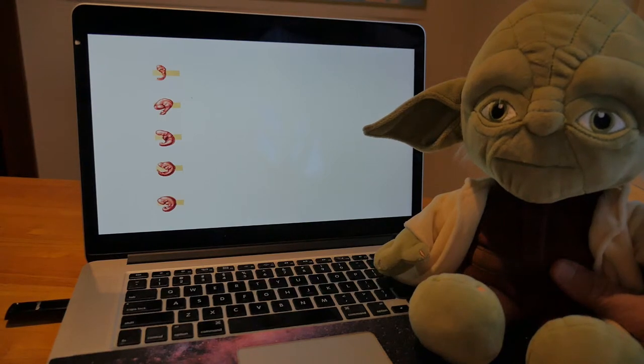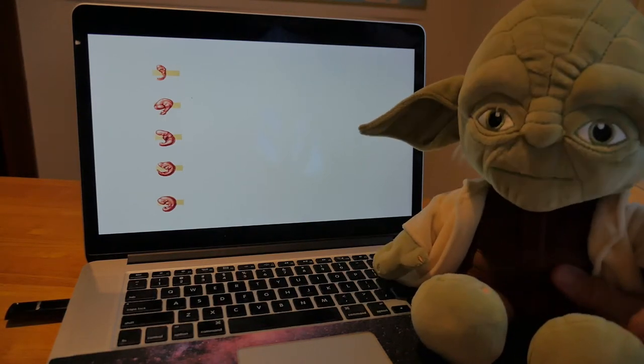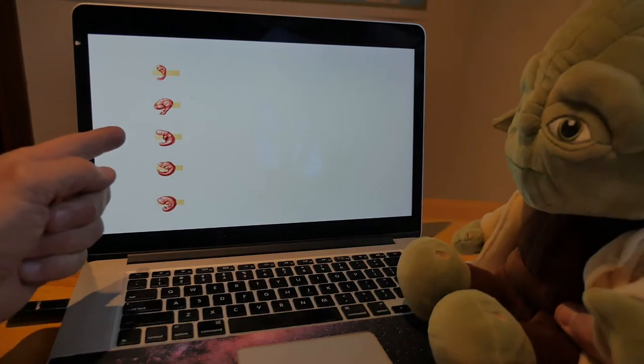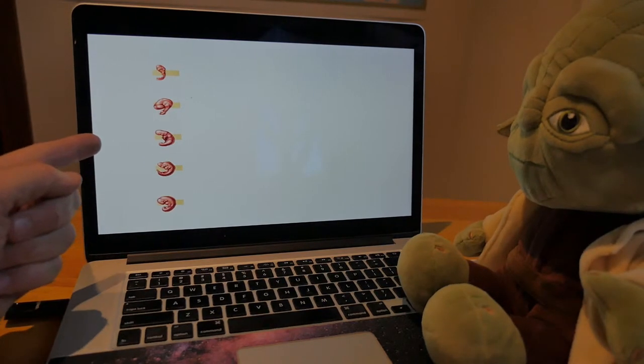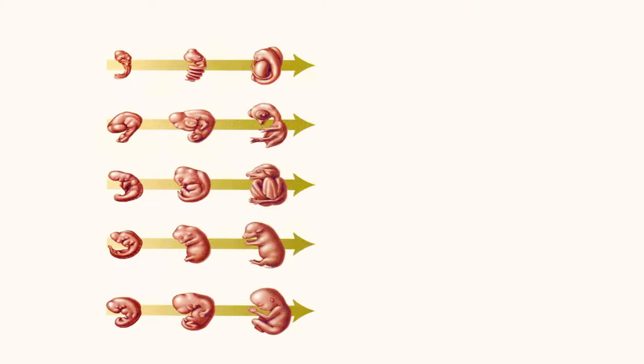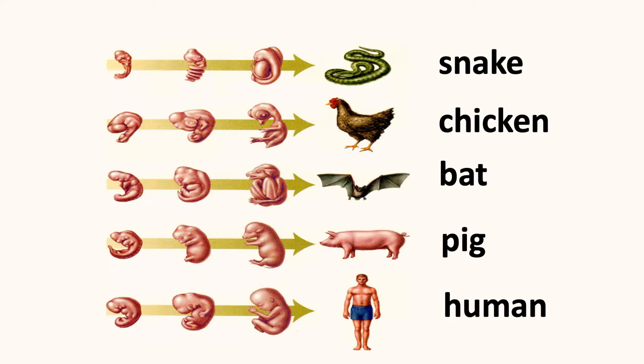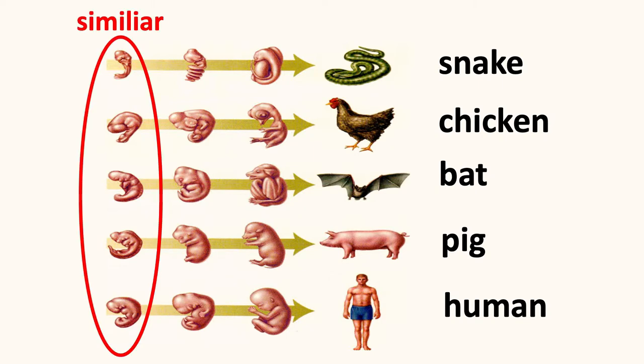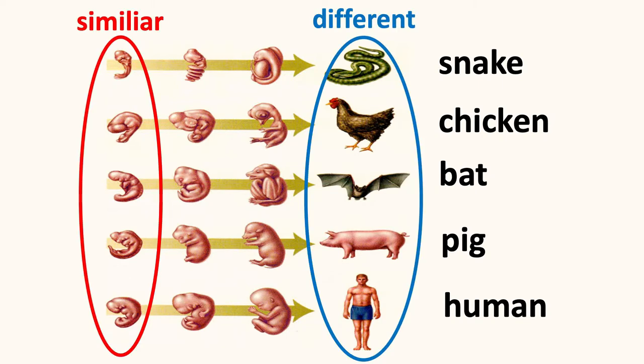So Yoda, do you want to see something interesting? Have a look at this. Now life forms, particularly the vertebrates shown here, these are embryos, as they develop into adults they look more and more different. So here's a snake and here's a chicken and a human being. So they start out similar and they end up as adults very different.